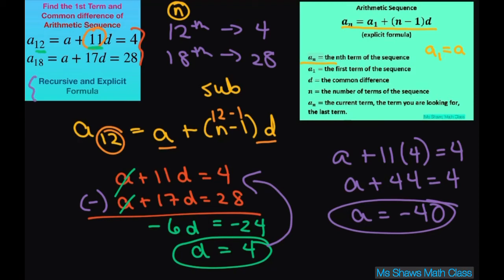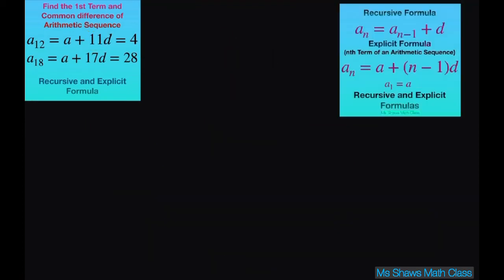Now we can write our recursive and explicit formula. Your recursive formula is right here. So your a was negative 40 and your d was plus 4. We just have to plug in for the recursive formula the d. So a sub n equals a sub n minus 1 plus 4. That's it.